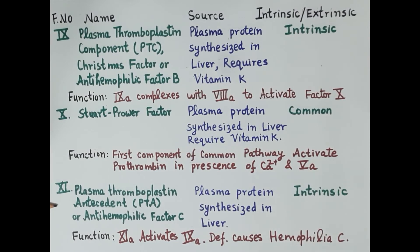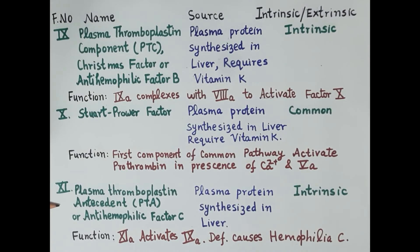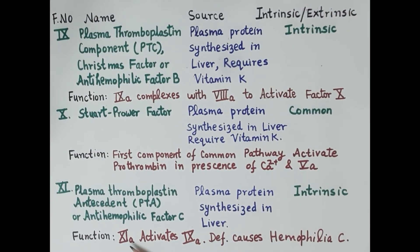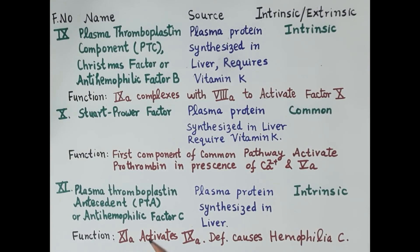Clotting factor 11 is termed plasma thromboplastin antecedent (PTA), or anti-haemophilic factor C. It is a plasma protein synthesized in the liver and is essential for the intrinsic pathway. Activated clotting factor 11 activates clotting factor 9 to 9a in the intrinsic pathway. Deficiency of clotting factor 11 causes haemophilia C.